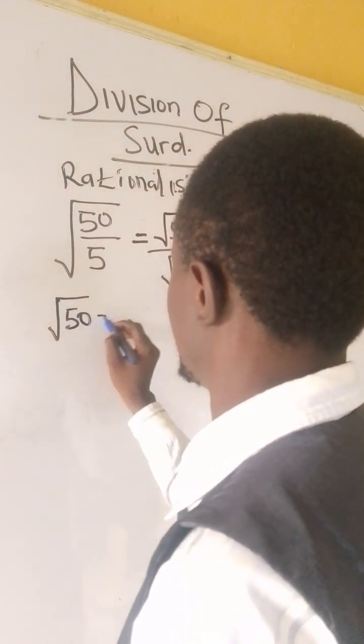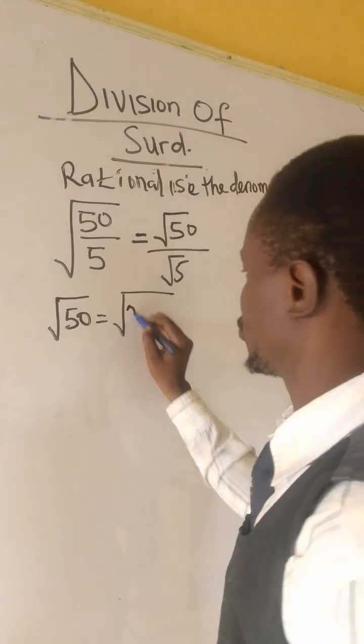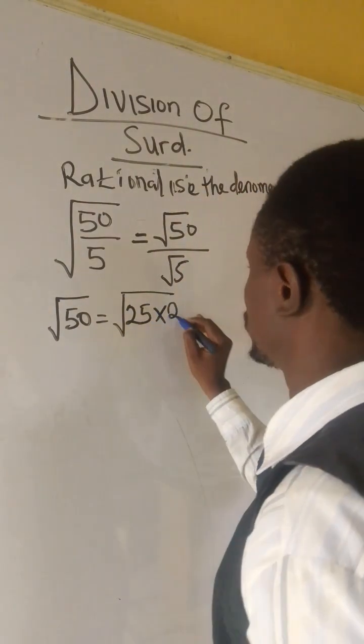Now, we have root 50. We give us 25 times 2.